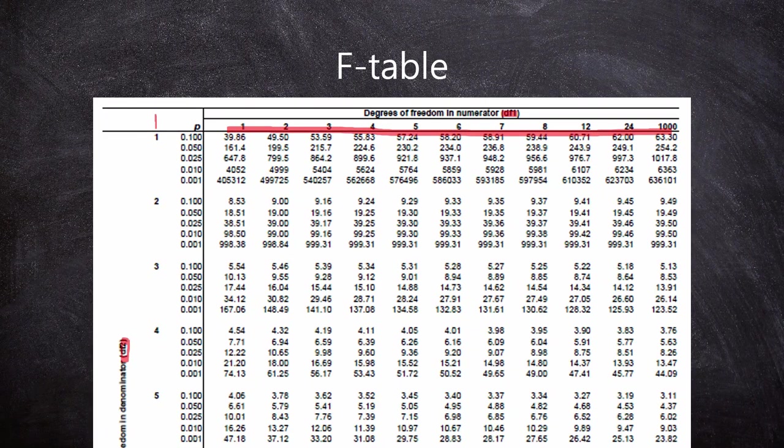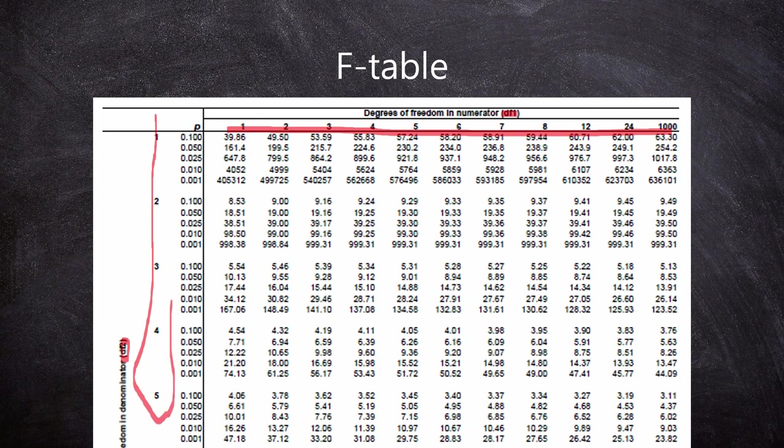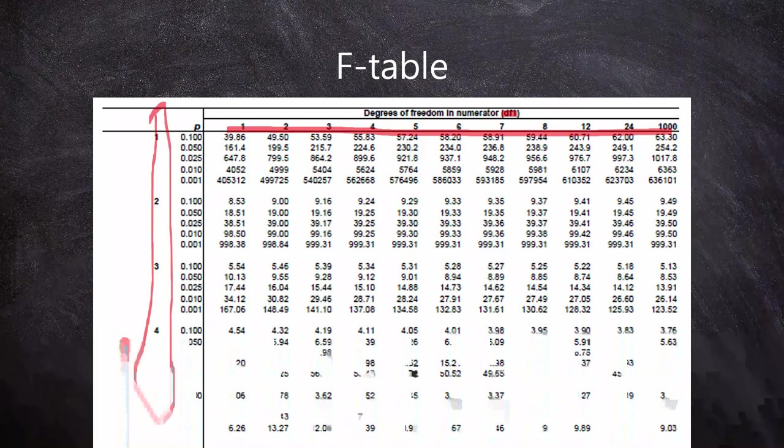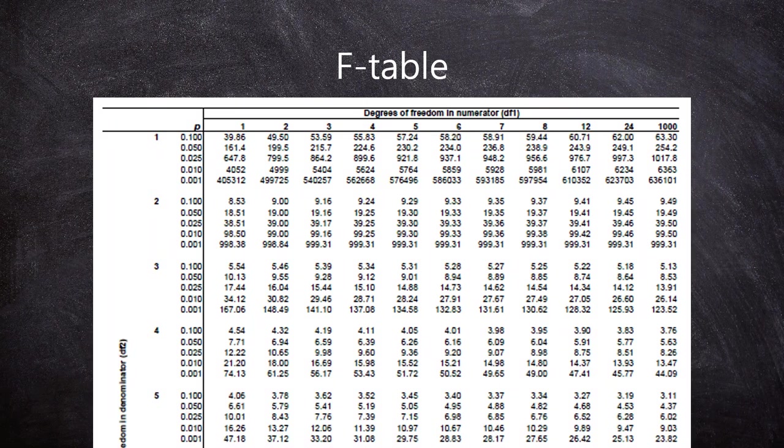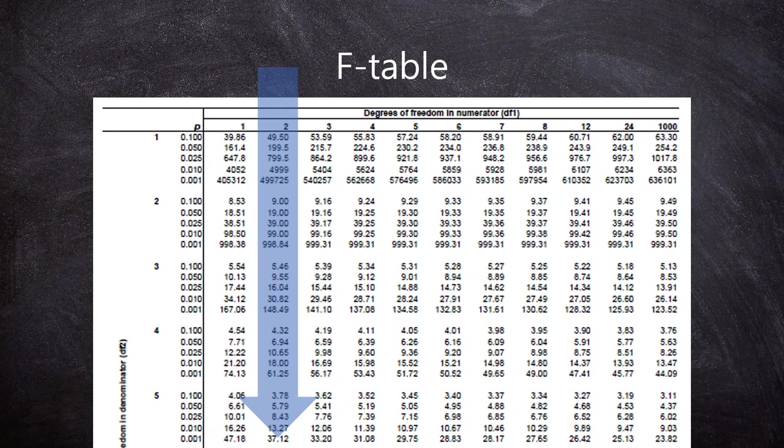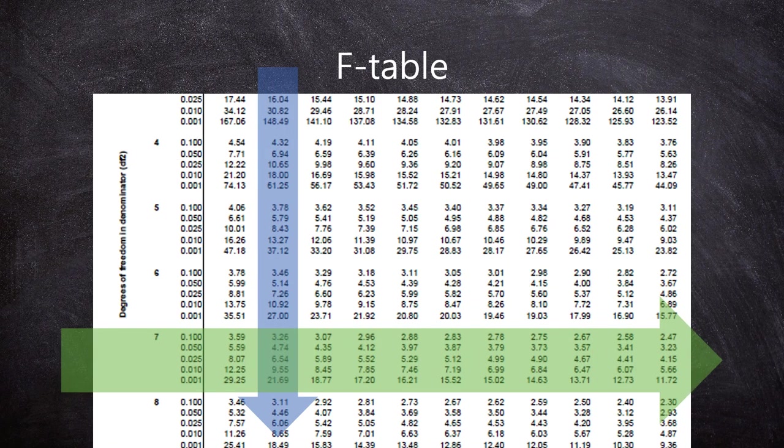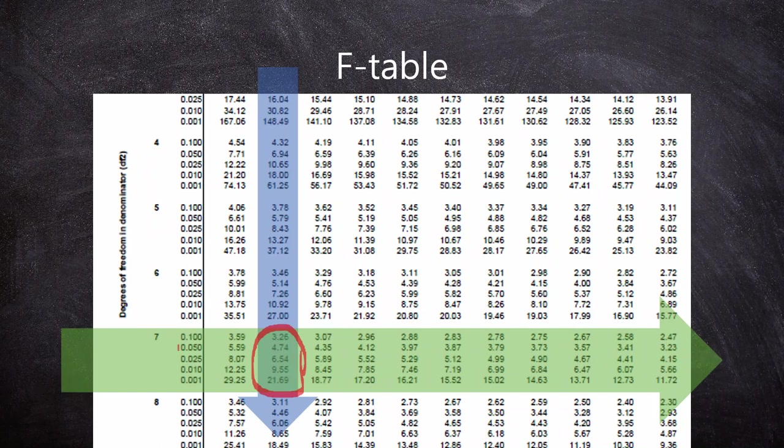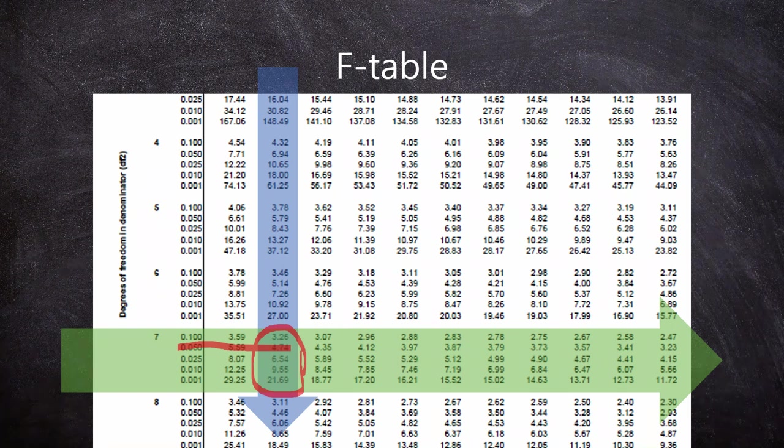Our first degree of freedom, DF-1, was 2 here. And second one, DF-2, was 7. So our numbers are here. And then, our criterion is a 5% p-value. So here, our number is 4.74.